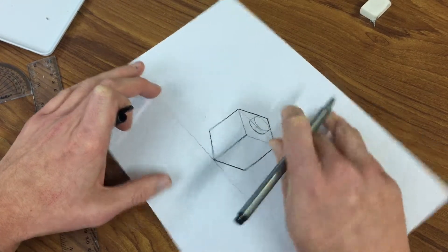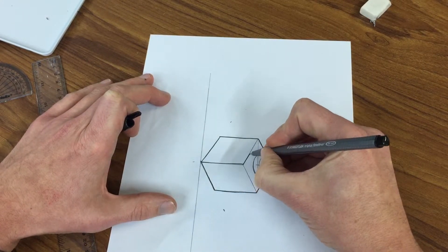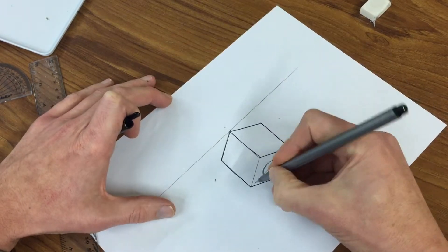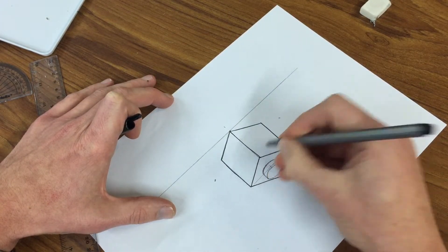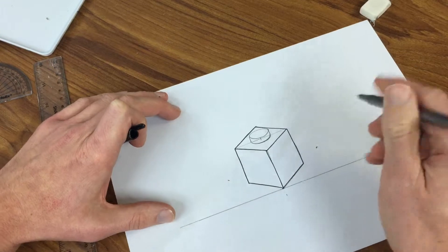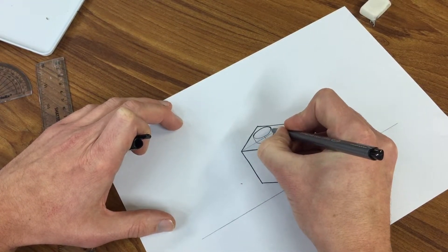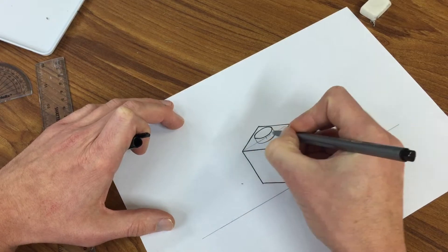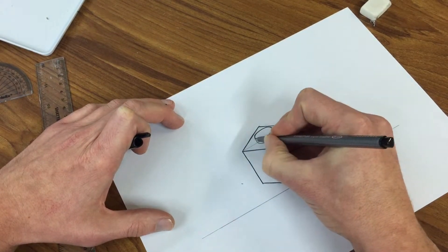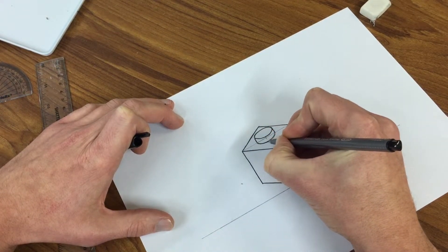When you use a black pen it's then going to stand out from the page a lot more. So go over all of the lines you want to keep on the page. Be careful with your oval. Go on smooth motion and join it up.